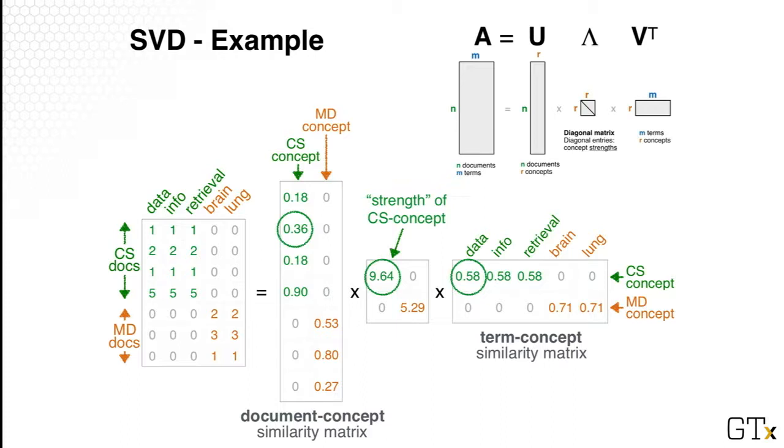So similarly, we can interpret the matrix U, the document concept similarity matrix in a similar way. So here, we have a higher number, that means it's more similar or more strongly associated with that concept.